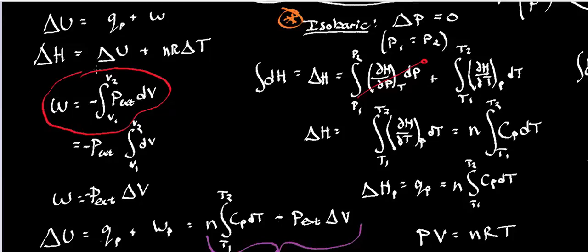Now, the pressure is constant. We're not changing pressure at all, so that means this pressure is a constant, meaning I can pull it outside of the integral. And then I get the work is equal to the negative P external times the integral of dV from V1 to V2.